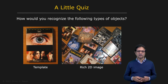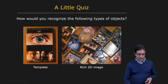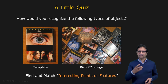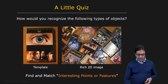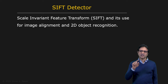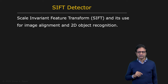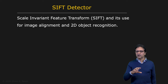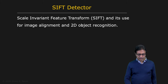Instead, what we would like to do is somehow extract directly from the given image some very descriptive, unique features. If we can find these features and find the same features in another image, then we can match them and recognize the object. That's exactly what the SIFT detector does. SIFT is short for Scale Invariant Feature Transform. We'll describe the theory behind the SIFT detector, its implementation, and show how it's used to solve vision problems such as image alignment and stitching, as well as 2D object recognition.